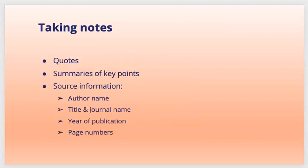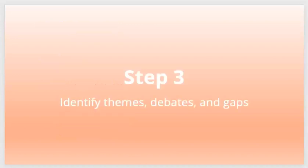Taking notes is a great skill for improving your learning from research papers. At this stage there is a lot of information to take in, so taking effective notes is important. Jot down specific quotes you might want to integrate into your review — quoting definitions or key concepts given by different authors can be particularly useful. Summarize key points and record source information including the author name, title, journal name, year of publication, and page number, so you can cite them properly.